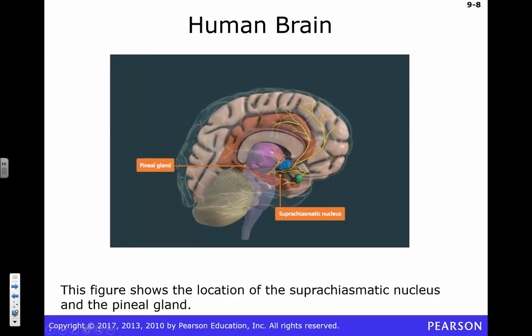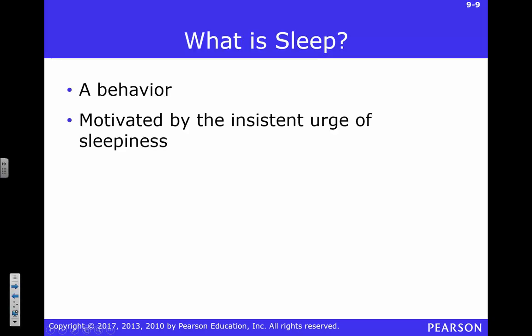There's the brain — this is showing you a couple of brain regions. One in particular we'll talk about today is the suprachiasmatic nucleus. So what is sleep? We can all sort of define sleep in our own terms. One important point: sleep is definitely a behavior. Sleep is not the same as being unconscious.